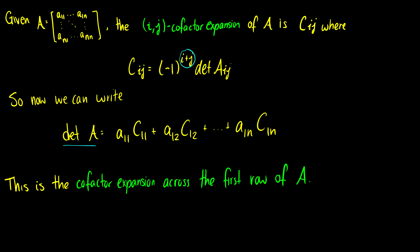Also now we don't have to do it exactly across the first row. This example here is the cofactor expansion across the first row, and it's across the first row because our first entries are all in the first row, going from 11 all the way up to 1N.